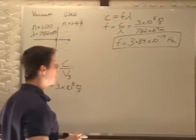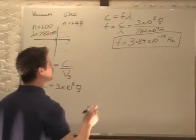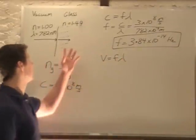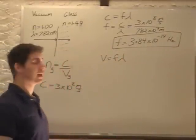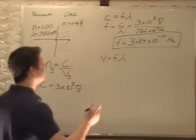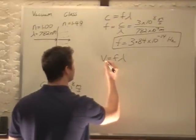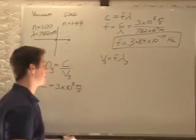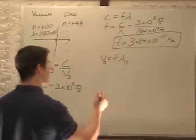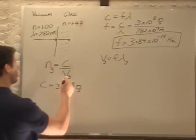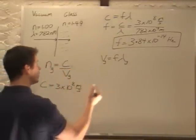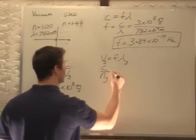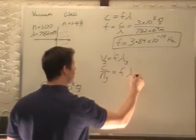Now we want to figure out the wavelength. We can say v equals f lambda for glass, since the velocity of light has changed. So v glass, lambda glass, with frequency the same. We'll substitute v glass equals c over n glass, giving us c over n glass equals f times lambda glass.